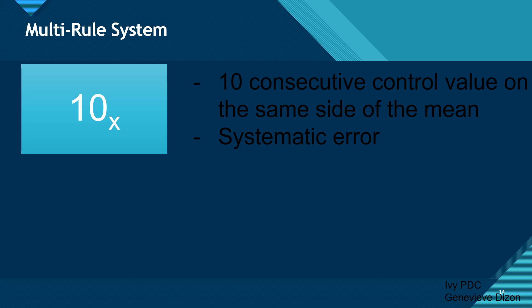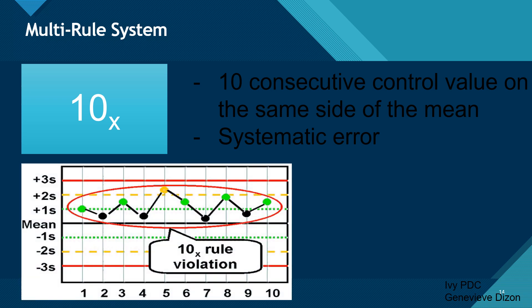The last rule is the 10-X rule. These are 10 consecutive control values on the same side of the mean, and this is also a systematic error. It doesn't matter if they are at the 1, 2, or 3 standard deviation level — as long as there are 10 consecutive values on one side of the mean, it can be on the positive or negative side. This detects bias, which is an accuracy problem. When we have a result like this, we reject the specimens that have been tested.